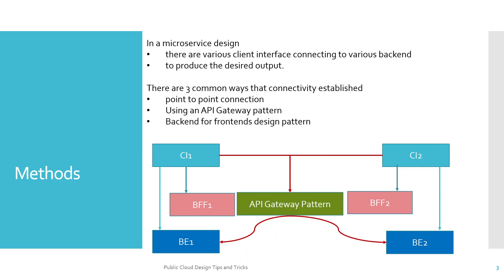The second one is a common component called the API gateway — it's also a design pattern. There is a single component responsible for connecting to backend one and backend two, and it establishes a connection between client interface one and client interface two to the downstream services. The third approach is the backend for frontend design pattern, which involves creating a BFF component for each client interface to connect to the backend systems.